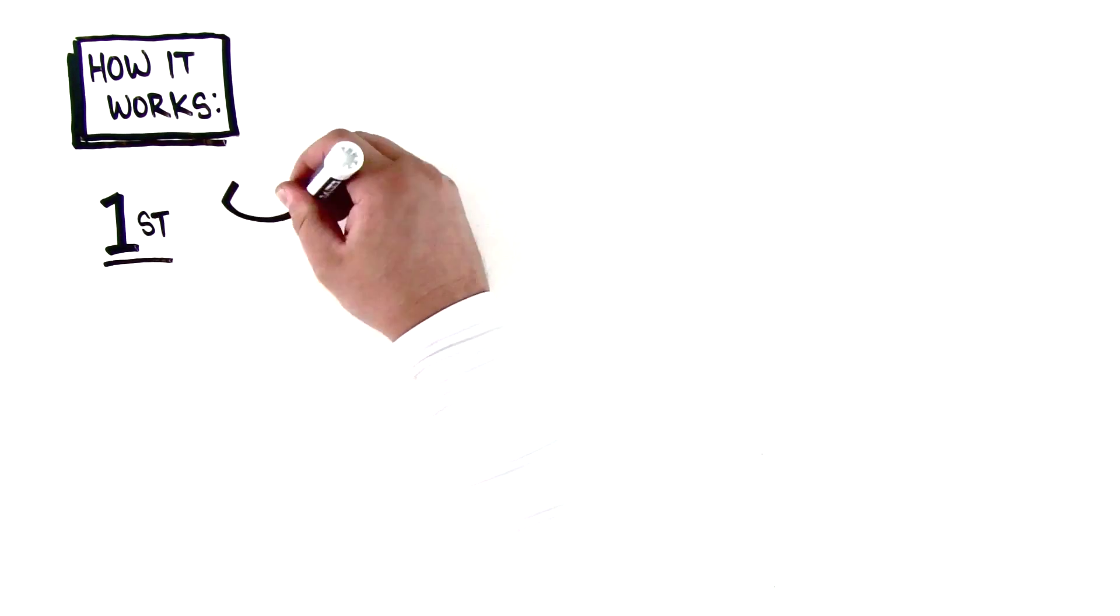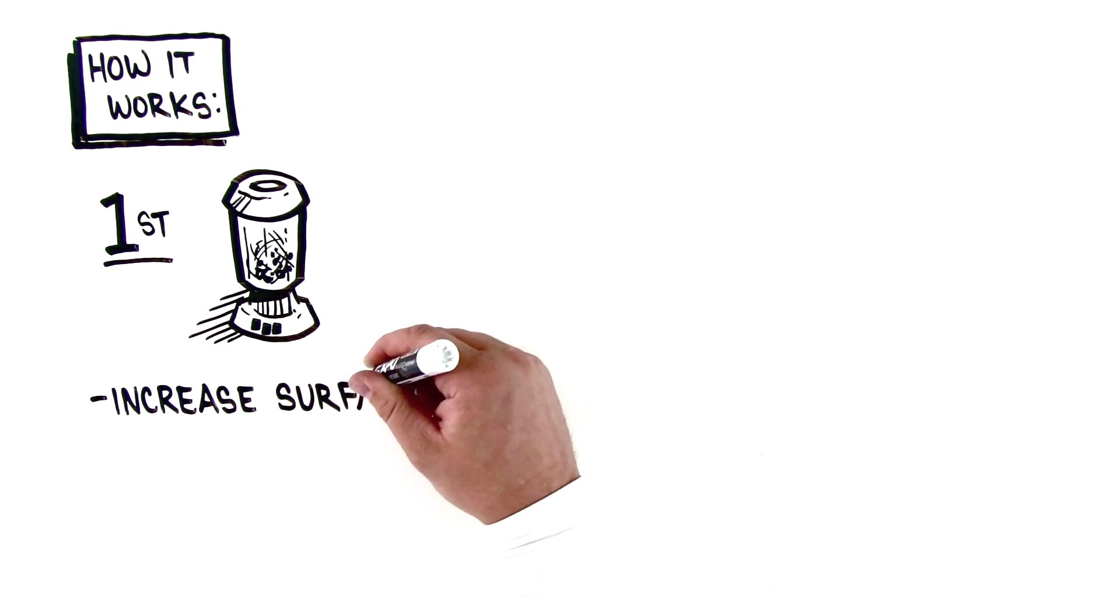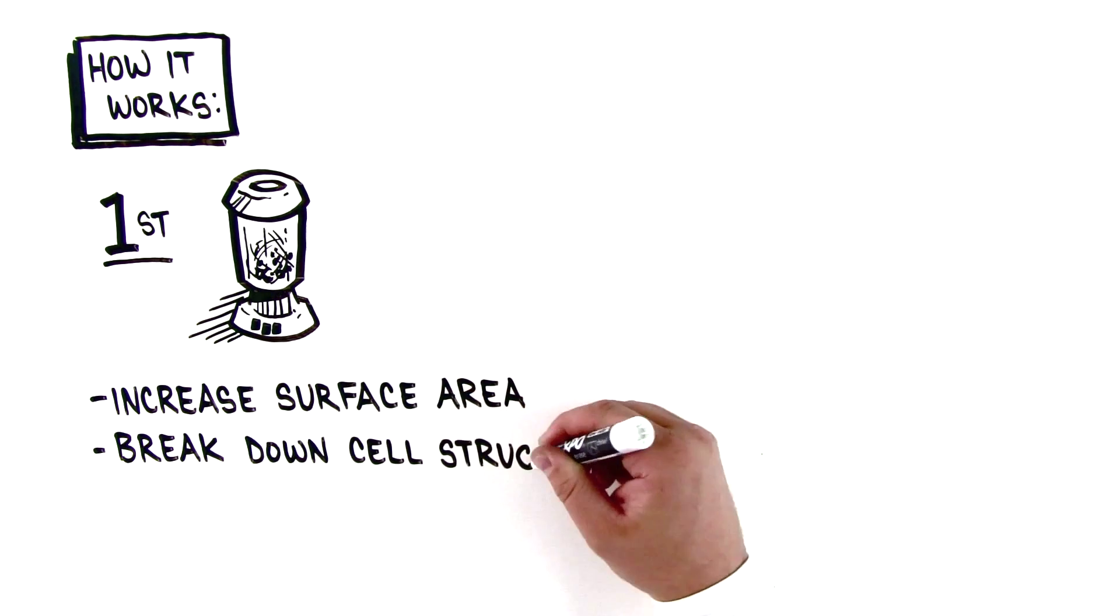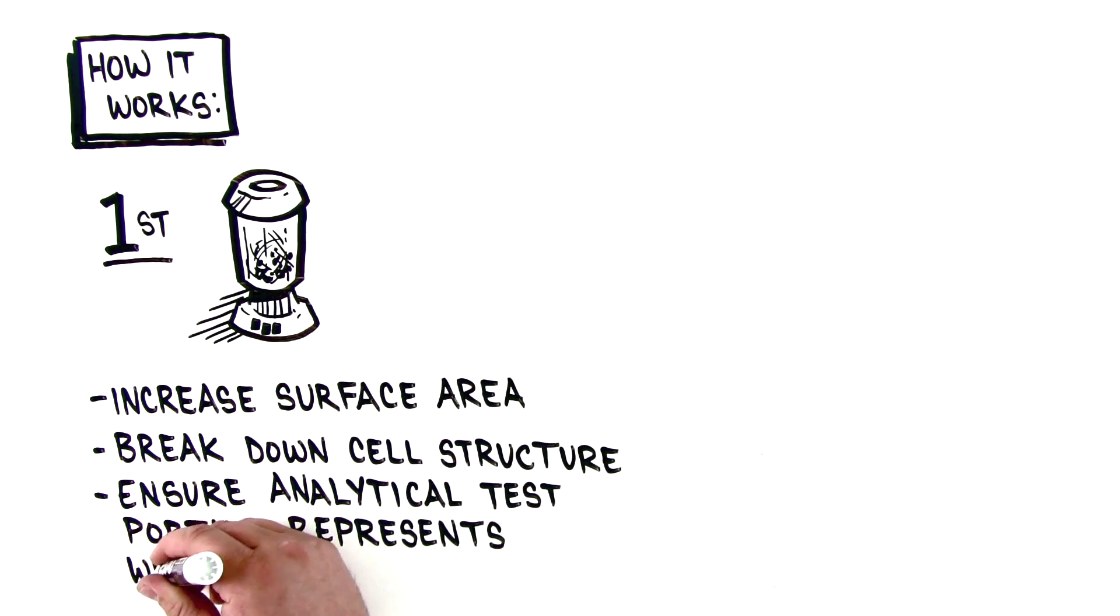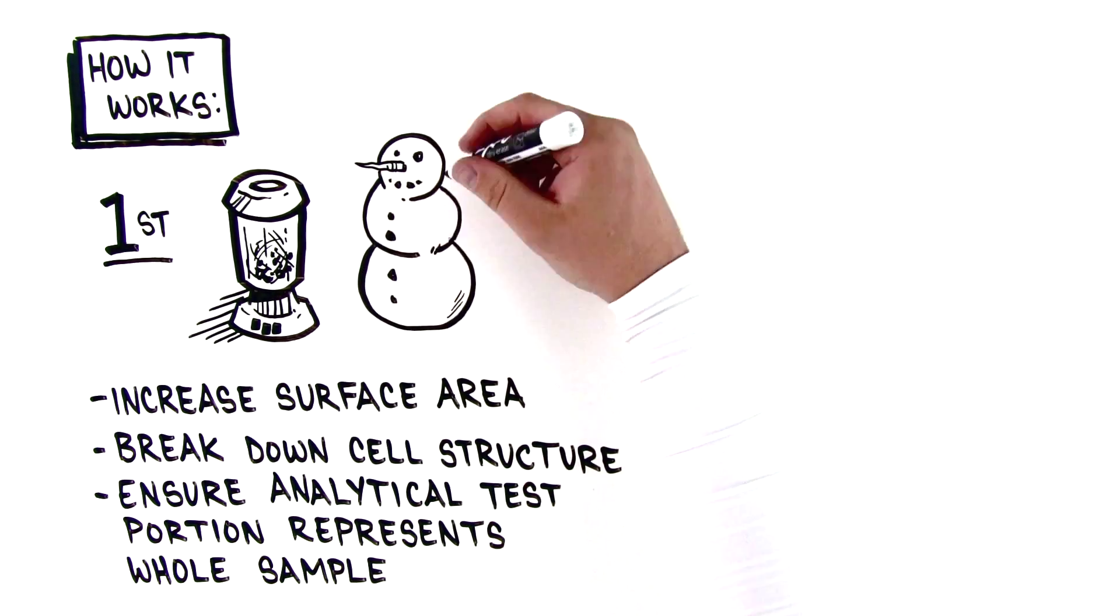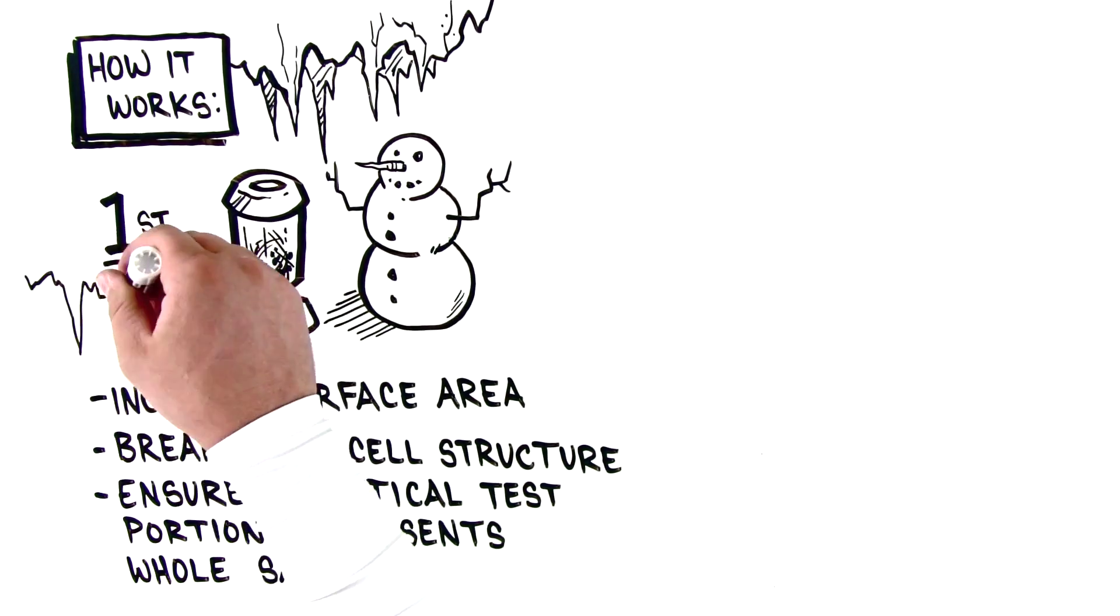Here's how QuEChERS works. First, homogenize the sample by grinding it as much as possible to increase surface area, break down cell structure, and ensure the analytical test portion is representative of the whole sample. It's often important to keep the sample cold to prevent analyte breakdown. Cryogenic milling is recommended.